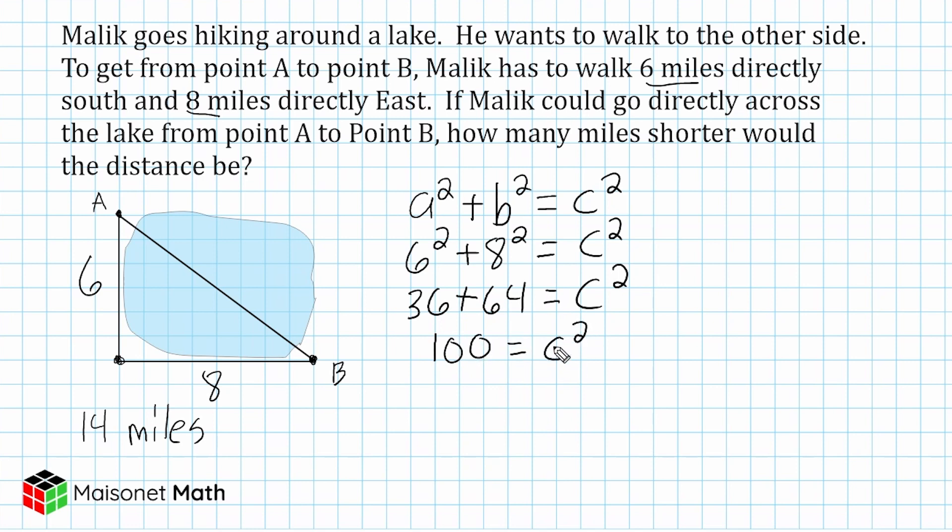And the only thing we could square to make 100 would be, of course, 10. To show our work though, we put a radical on both sides, a square root, and a square or an exponent of two cancel each other out, leaving us with C. And that is exactly equal to 10.